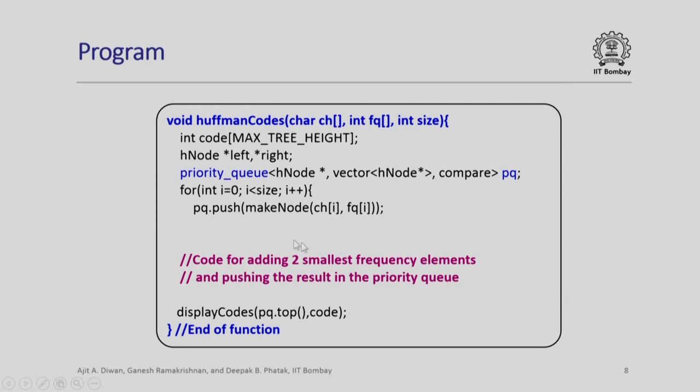We simply use this to create a iteration to insert all of these in the priority queue. Please note that when we insert them PQ.push function that we use we have seen that function how the nodes get inserted.